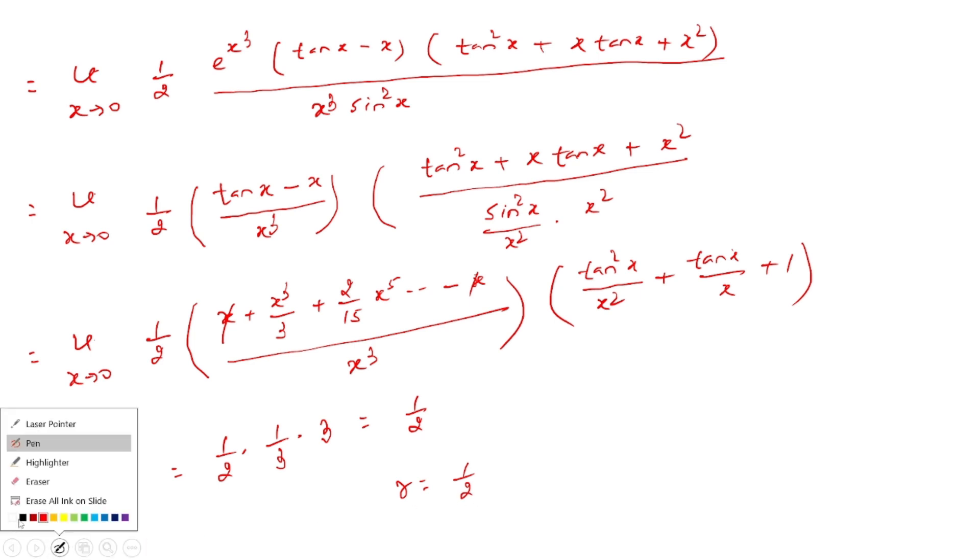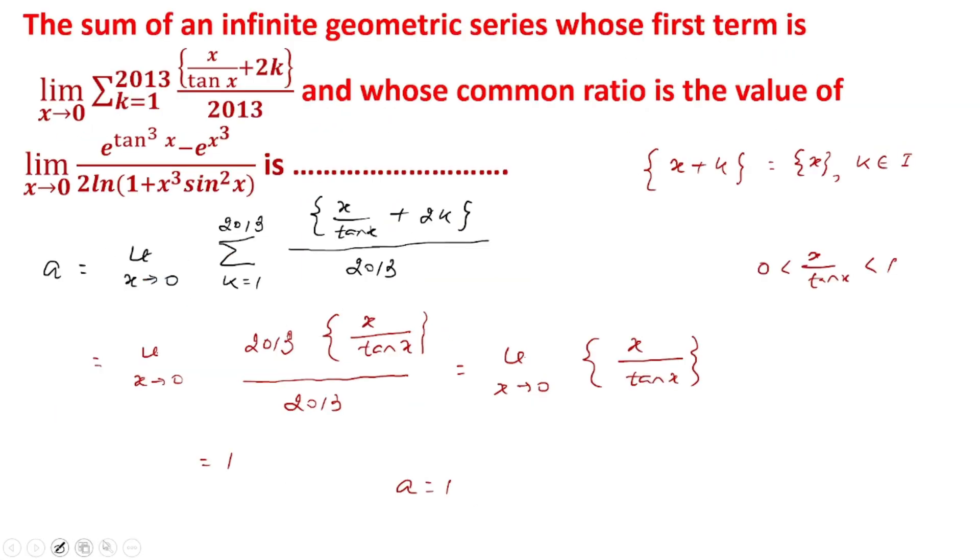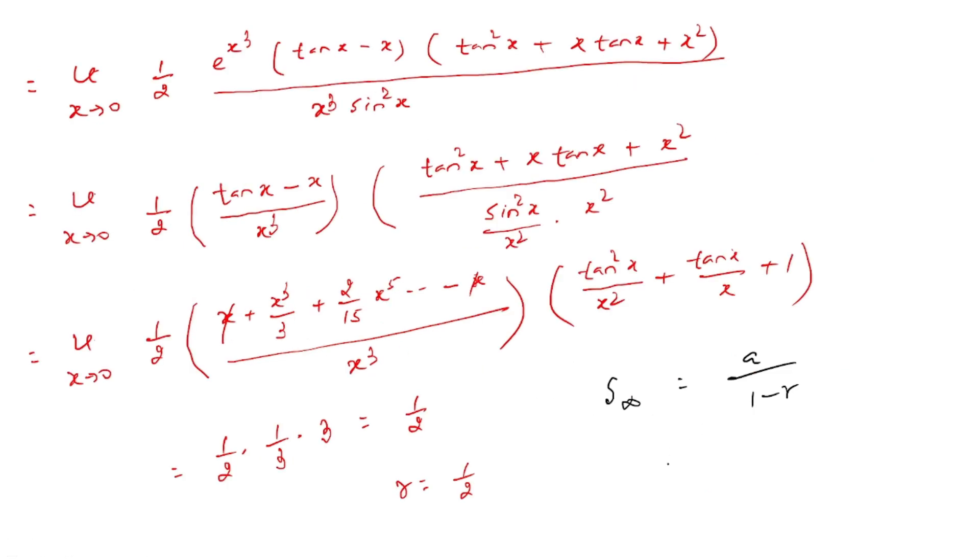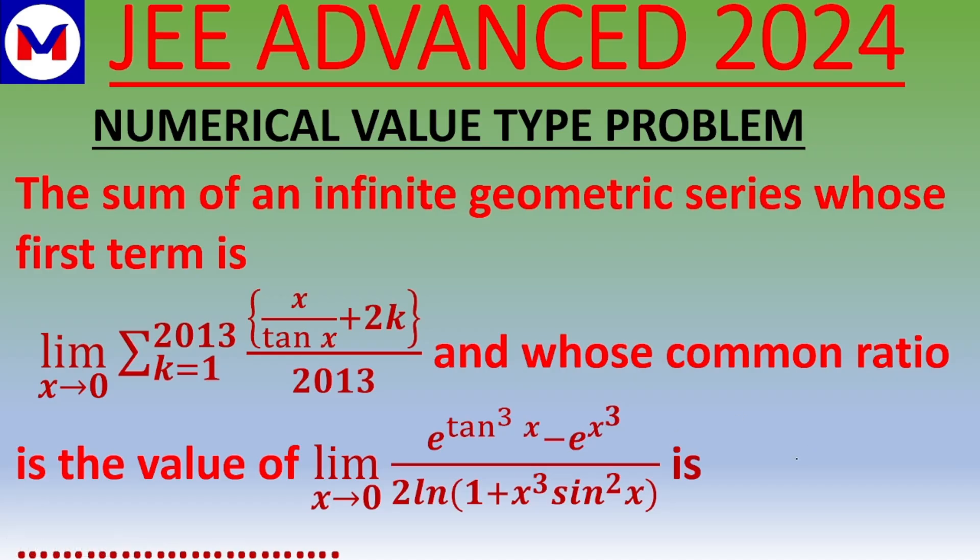Therefore, the sum of an infinite GP is a/(1 - r), where a equals 1. This is 1/(1 - 1/2), which equals 2. Thus, the sum of the infinite GP for this a and r is 2. This is the required answer. I hope you understand it well. Thank you.